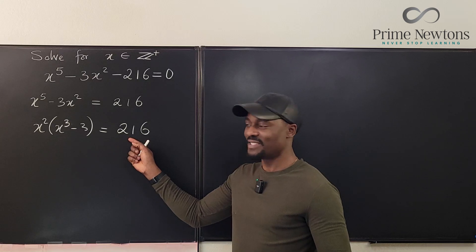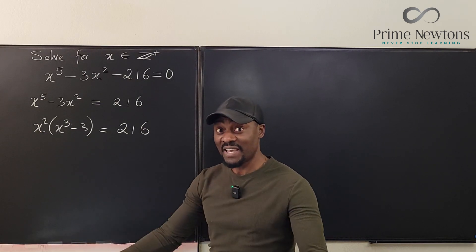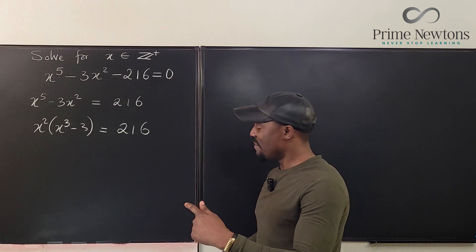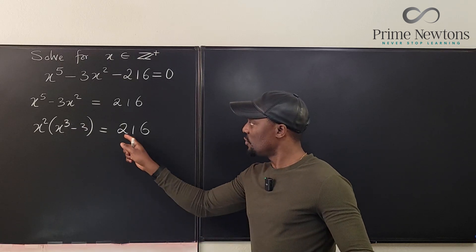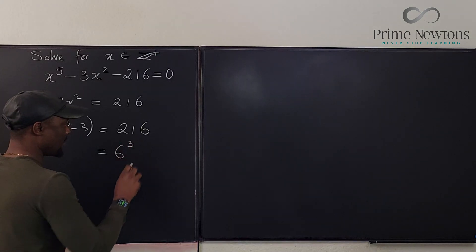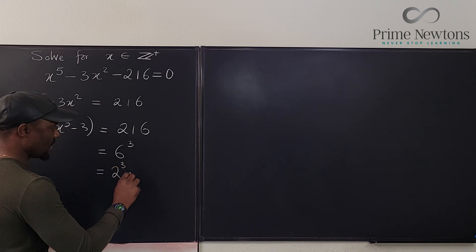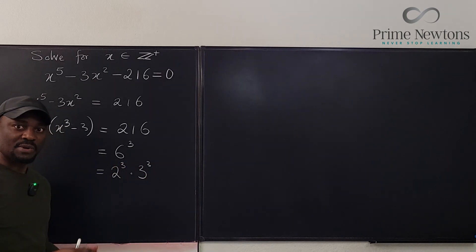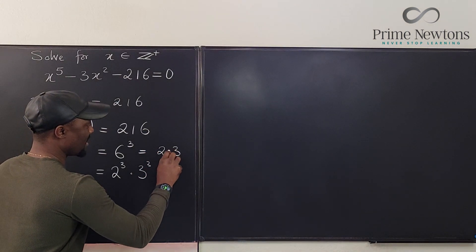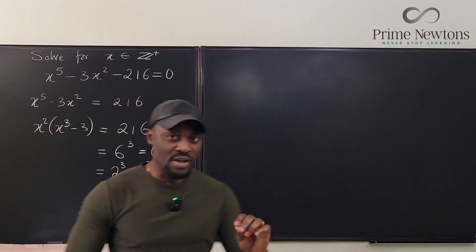The only question I'm going to ask myself is: is it possible for me to write 216 as the product of a square and another number? Because if I can, then I'm good. Looking at it, once you know that 216 is 6 to the third, this is the same thing as 6 to the third, which is equal to 2 to the third times 3 to the third. By laws of exponents you can break it down - this is equal to 2 times 3 to the third.